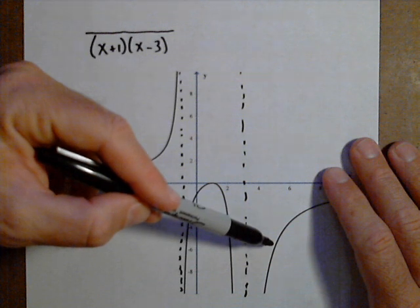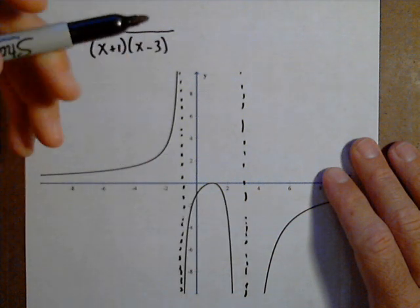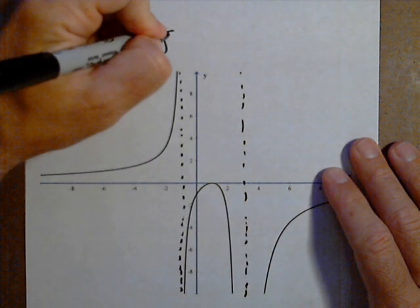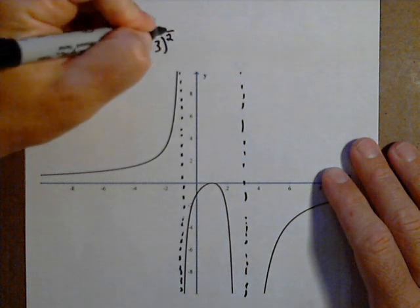But here, it goes from negative to negative, so that implies an even multiplicity. We'll start with squared, and we can always adjust that if we need to later.